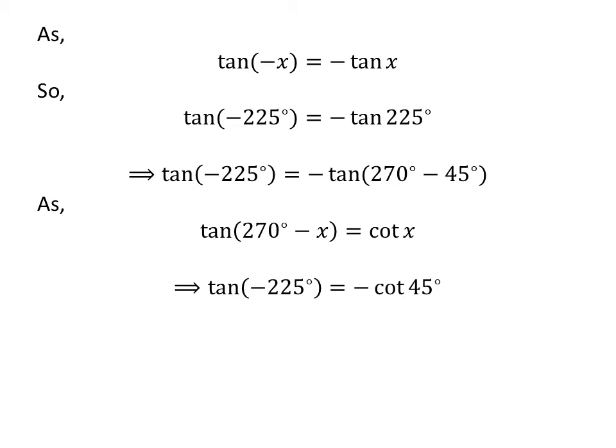Let us apply the above identity for tangent of 270 degrees minus 45 degrees. Here, x is 45 degrees. So, tangent of minus 225 degrees is equal to minus cotangent of 45 degrees.